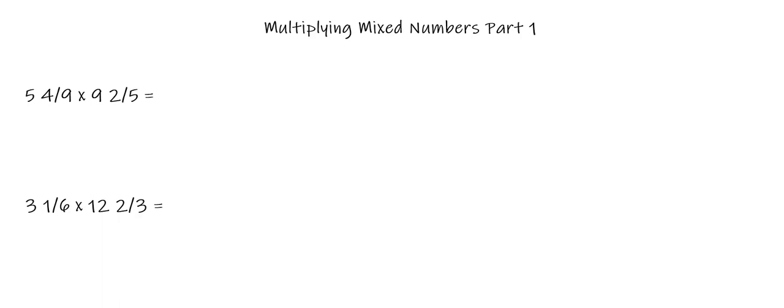So let's look at an example. We have 5 and 4/9 multiplied by 9 and 2/5. Our first step is to isolate the fractional parts of our mixed numbers. So that will just be our 2/5 and our 4/9. The next thing you want to do is multiply these numbers. 4/9 times 2/5 will give us 8/45. You want to write that down because that will be the fractional part of your answer.